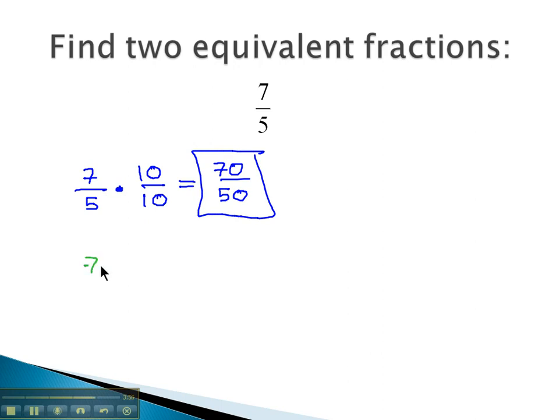We could find a second equivalent fraction by taking seven-fifths and multiplying by something else. How about eight over eight, same thing on top and bottom. That's all that matters. Seven times eight is fifty-six, and five times eight is forty, and we have another fraction that's equivalent to seven-fifths, just looking different but having the same value.